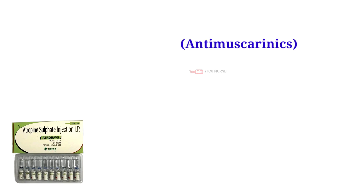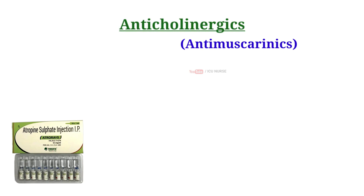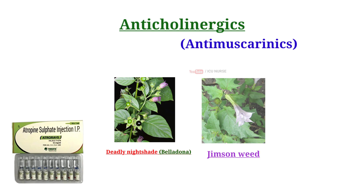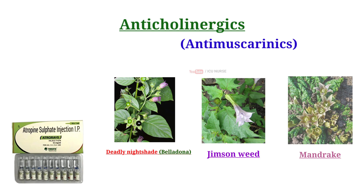Injection atropin belongs to the class of medications known as anti-muscarinic agents, which are a subtype of anti-cholinergic medication. Atropin occurs naturally in a number of plants of the nightshade family, including deadly nightshade, Jimson weed and mandrake.